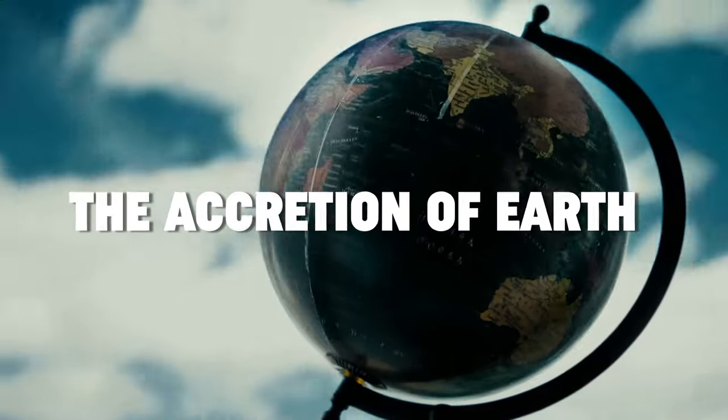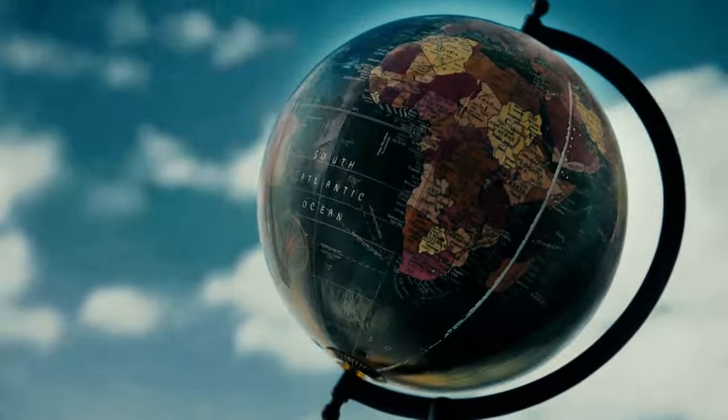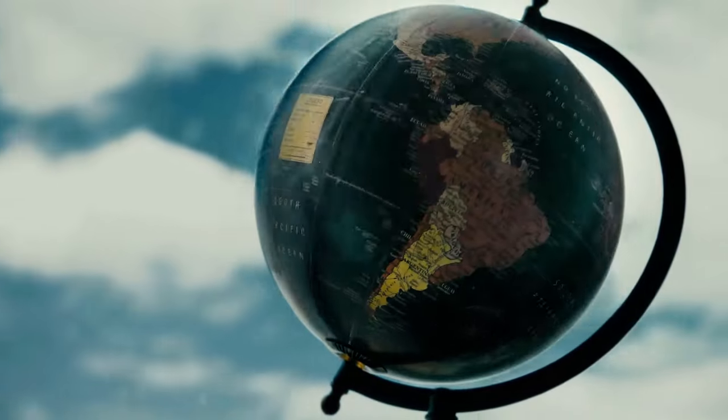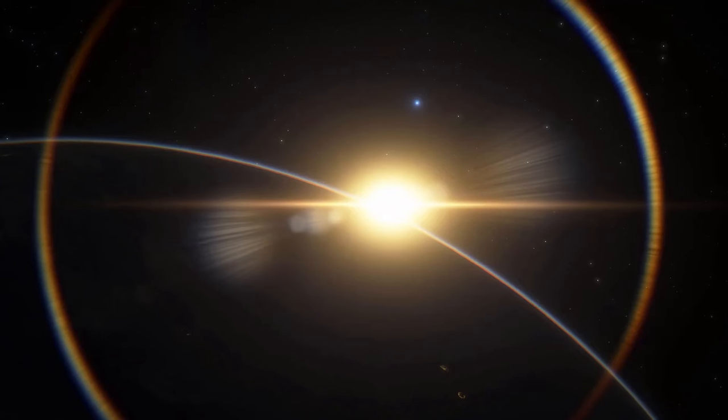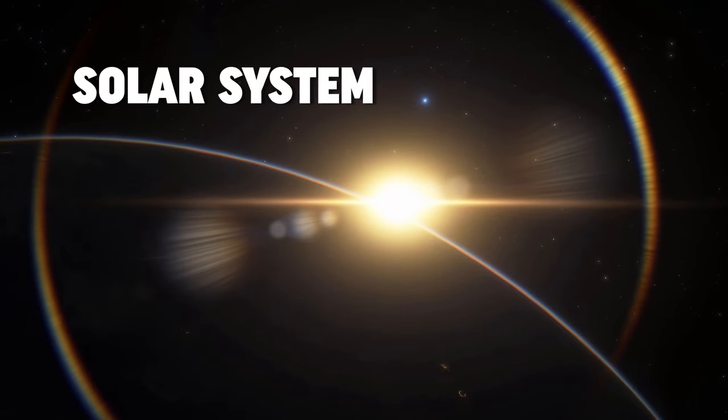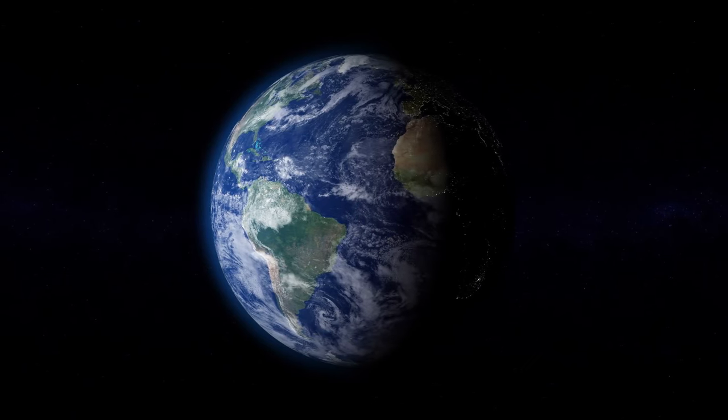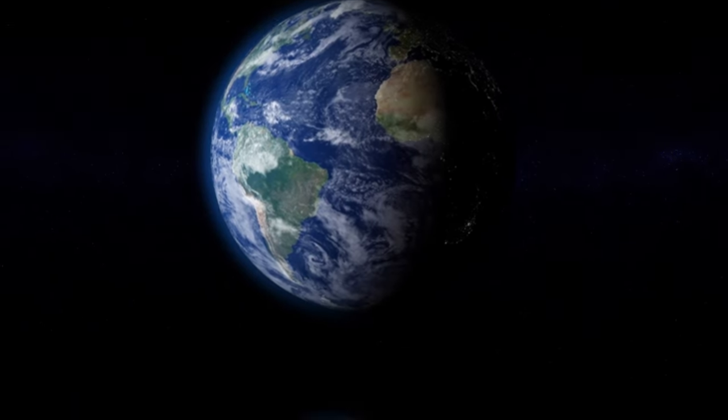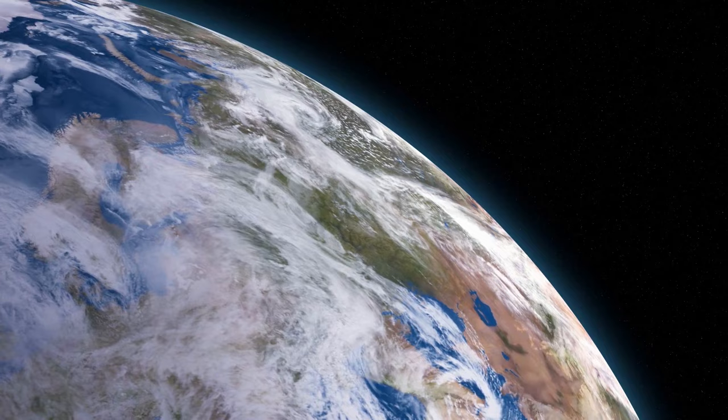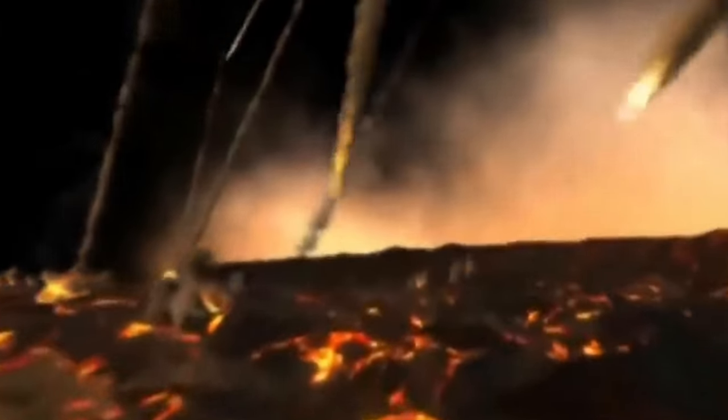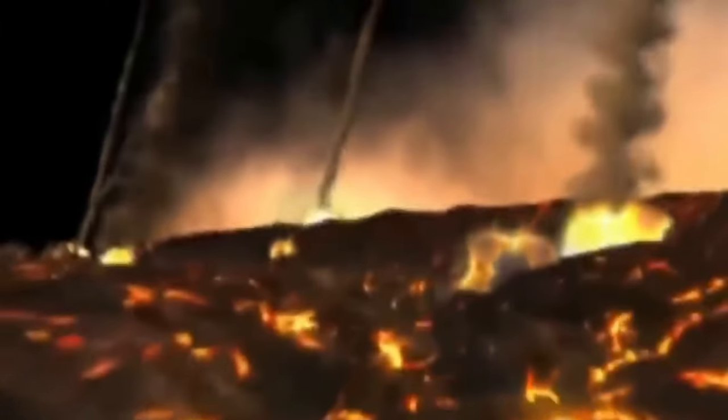The story of Earth's formation is a tale of cosmic accumulation and transformation, unfolding in the vast expanse of the early solar system. At the heart of this process was accretion, a pivotal mechanism through which the Earth, as we know it, gradually came into being. This stage of planetary formation began in the solar nebula, a dense cloud of gas and dust left over from the Sun's formation.